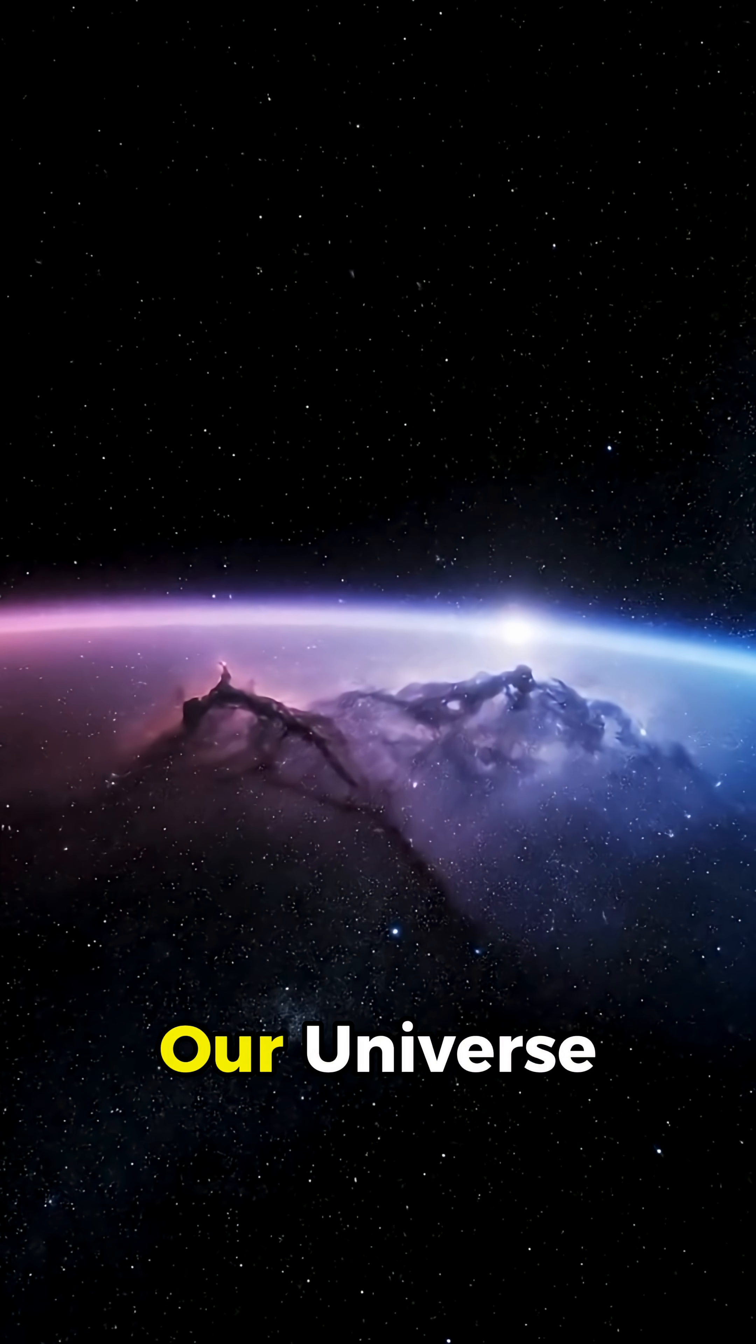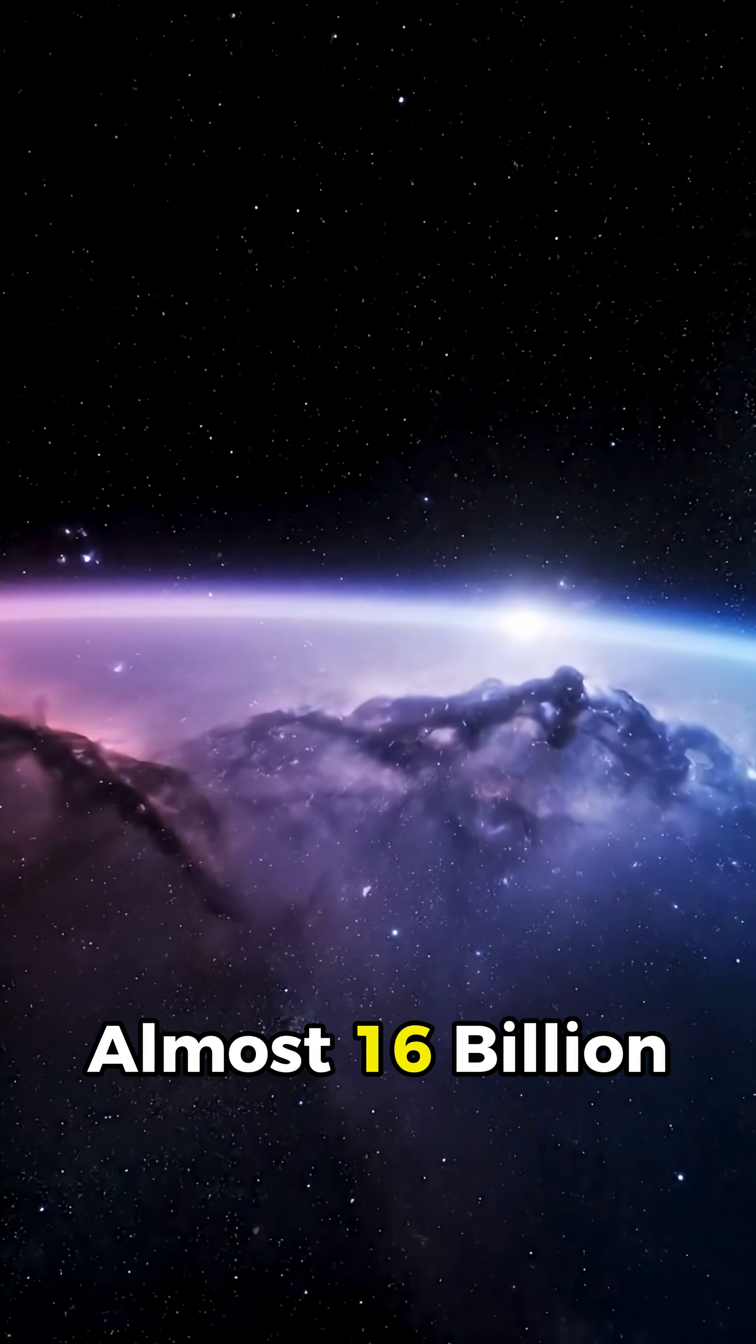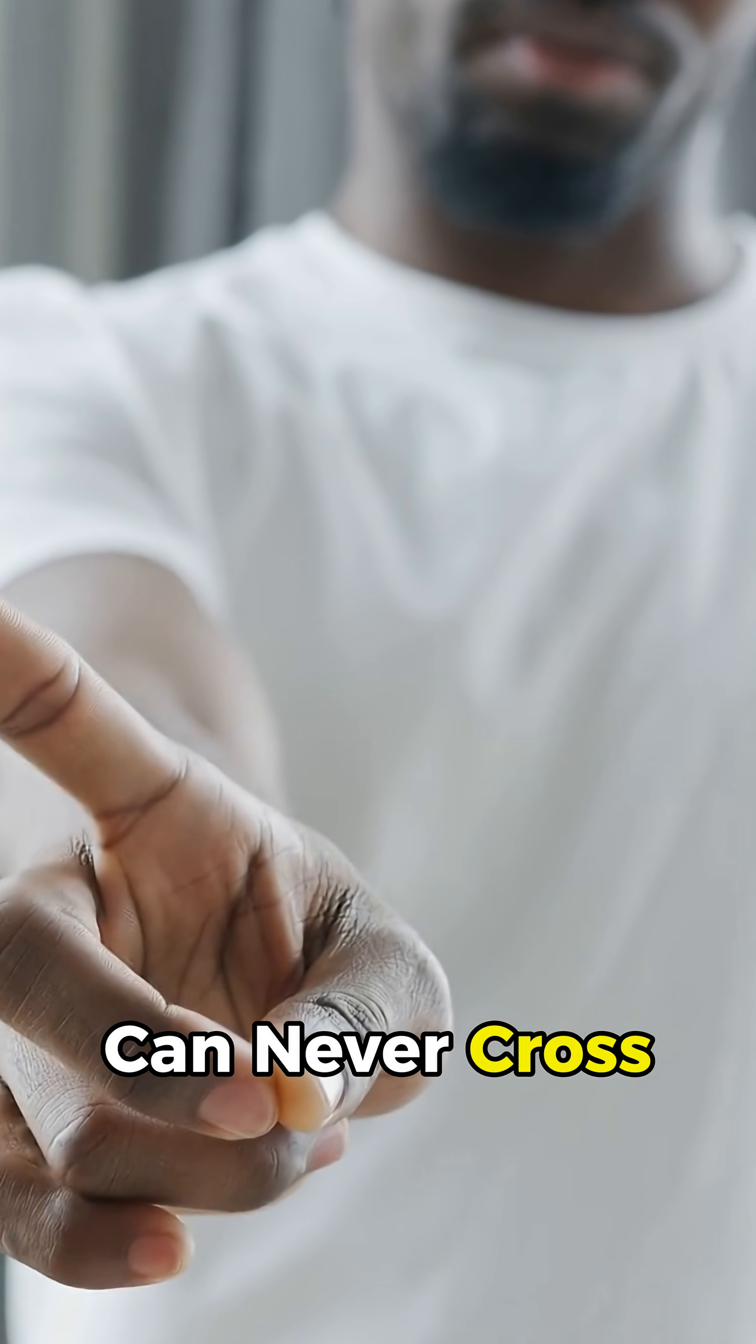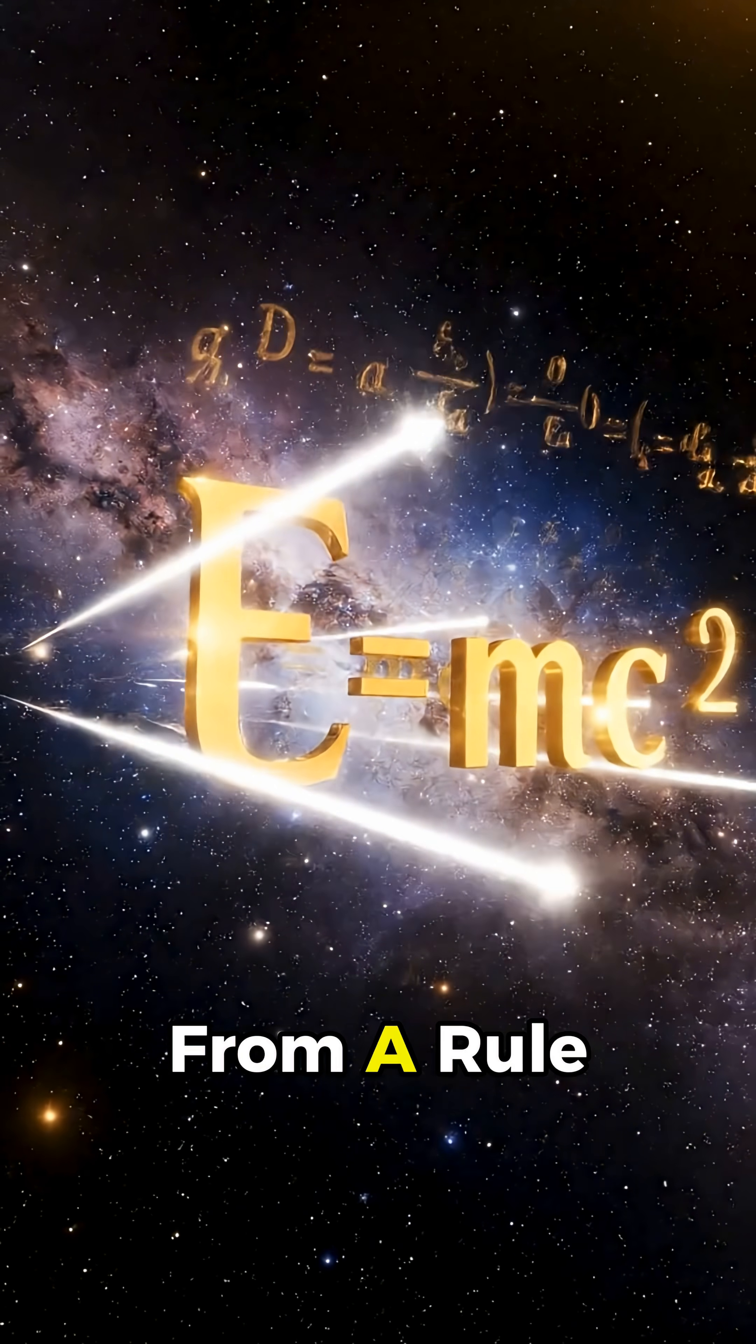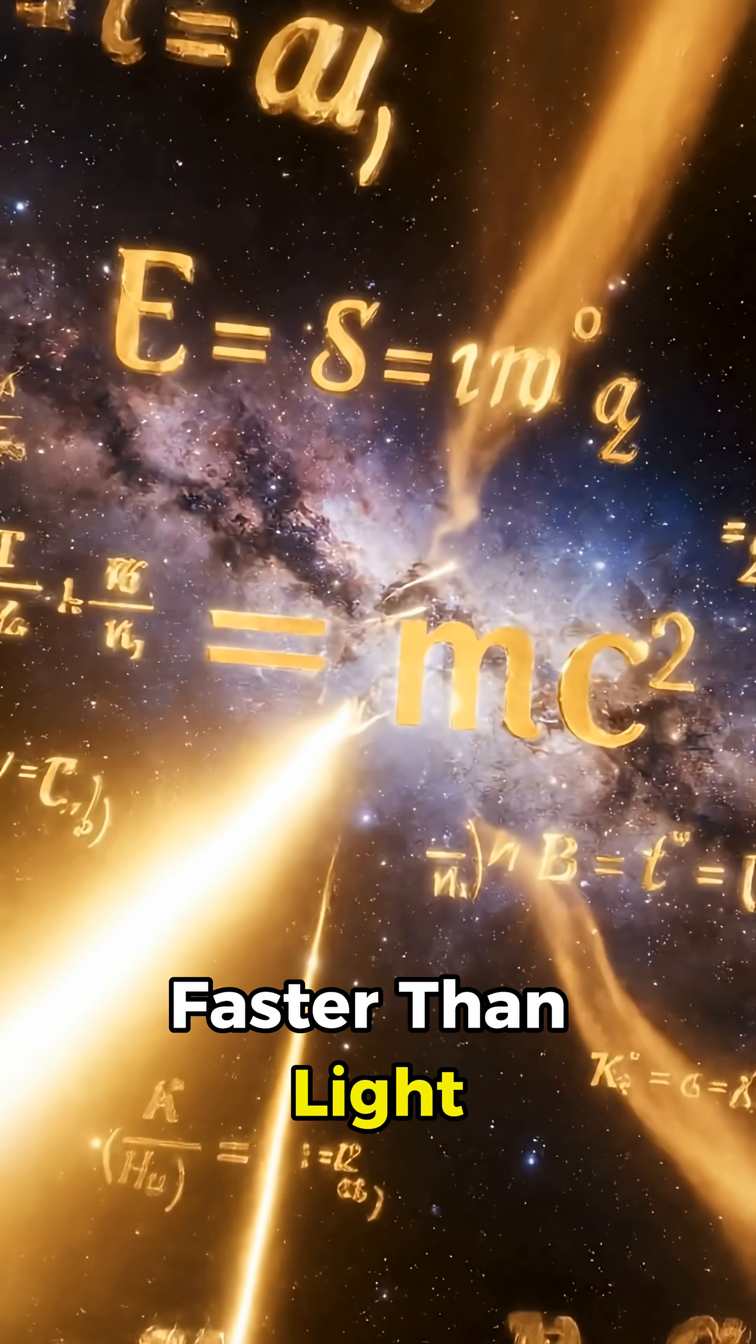This is the farthest edge of our universe, an unseen boundary almost 16 billion light years from Earth, a line we can never cross. The reason comes from a rule Albert Einstein uncovered. Nothing can travel faster than light.